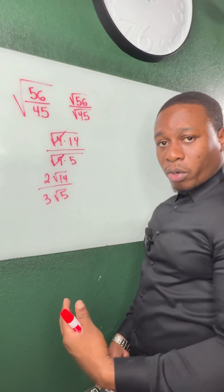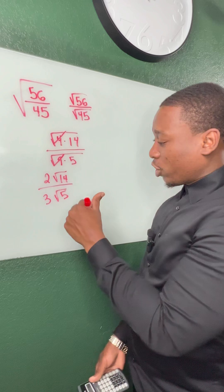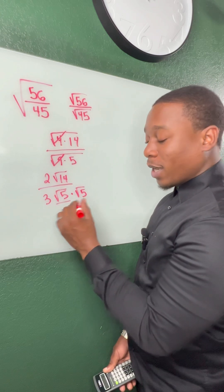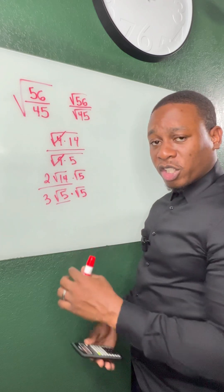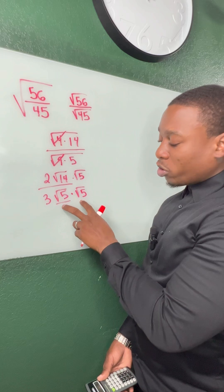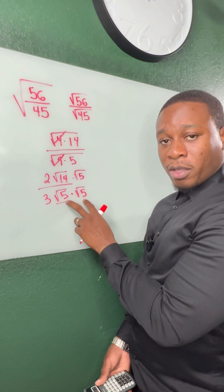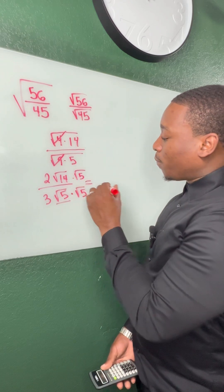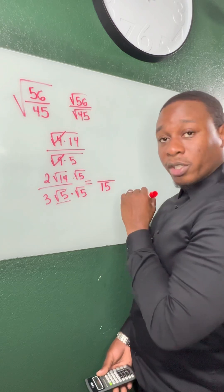Now the reason why we're not done is because we can't have radicals in the denominator of a fraction. So we're going to rationalize by multiplying by radical 5, and whatever we do in the bottom of the fraction, we have to do in the top. When we multiply these two together, this is just radical 25. We know the square root of 25 is 5, so 5 times 3 gives me a 15 on the bottom of my fraction.